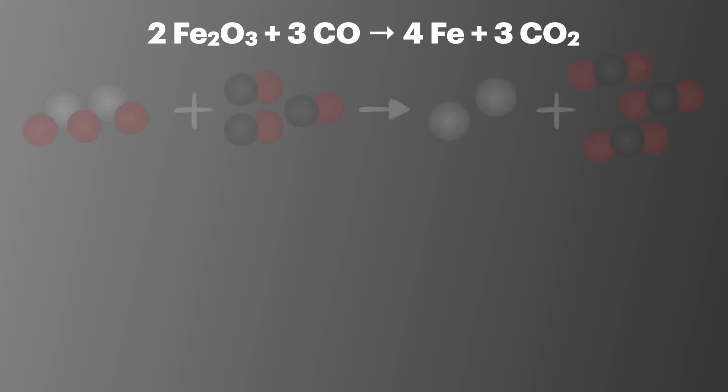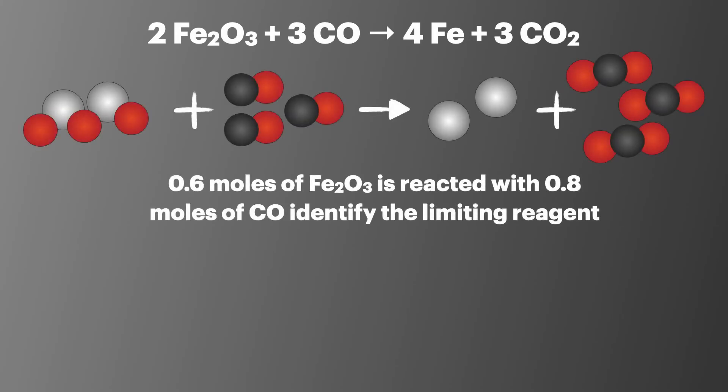We'll look at this reaction as an example of calculating the limiting reagent. We have 0.6 moles of Fe2O3 that has been reacted with 0.8 moles of carbon monoxide, and we're asked to identify the limiting reagent. We're going to first start off by looking at the reactants in the balanced equation. Here we can clearly see that iron oxide reacts with carbon monoxide on a ratio of 2 to 3.